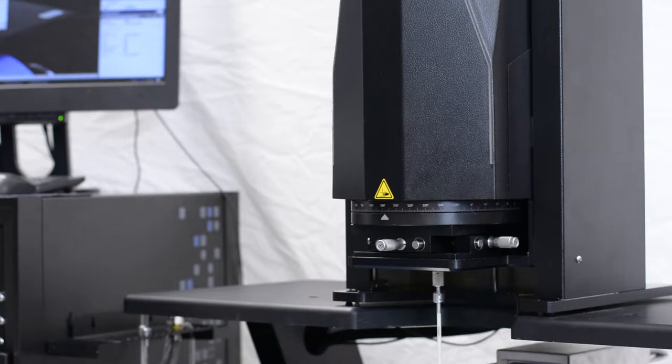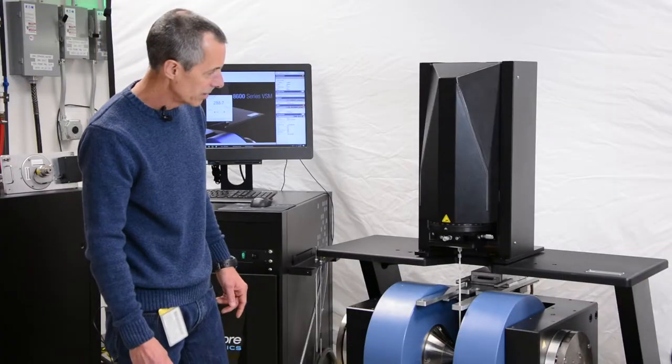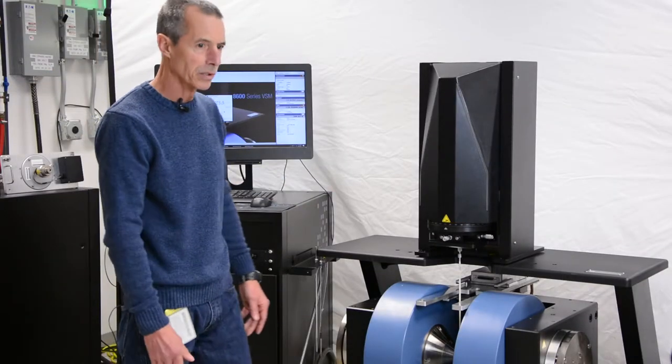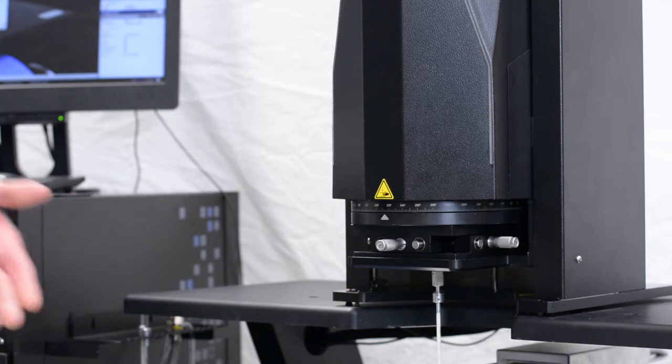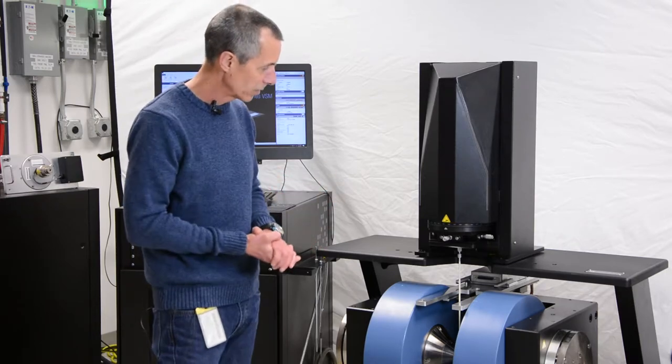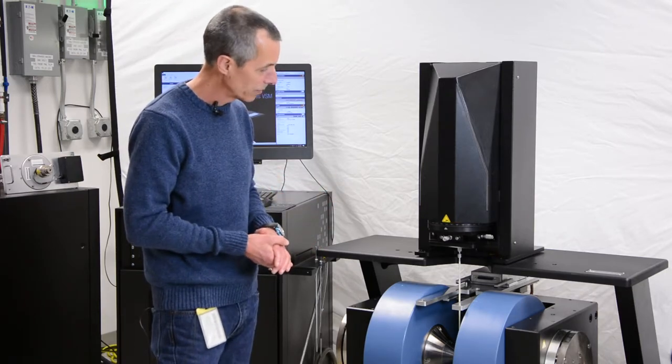This function enables you to measure, for example, rotational hysteresis in materials. If you're measuring thin film and you want to do a hysteresis loop measurement with the film oriented both in plane and out of plane, then all of this can be handled automatically via the software.